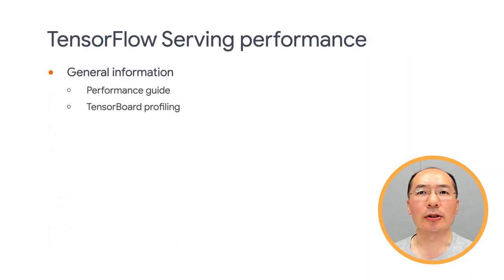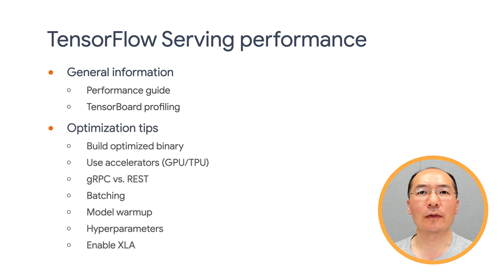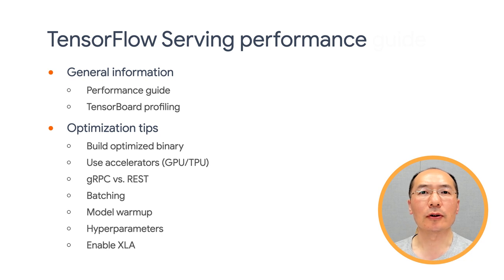TensorFlow Serving is the inference framework that helps you serve your production ML models with low latency and high throughput. While TF Serving is designed with high performance in mind, its performance is highly dependent on the application it runs and the environment in which it is deployed. This means that tuning TF Serving's performance is somewhat case dependent, and there are very few universal rules that are guaranteed to yield optimal performance in all settings.